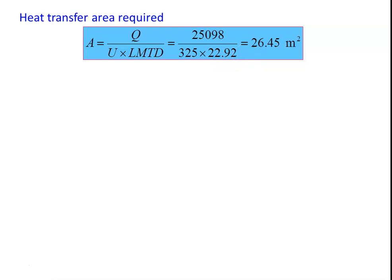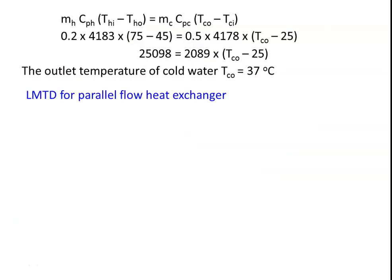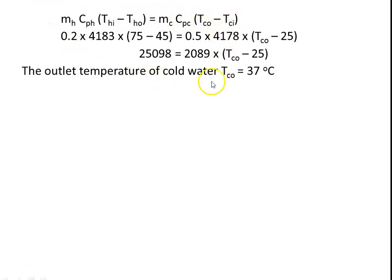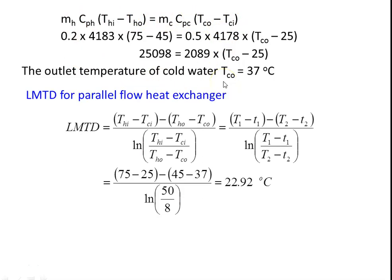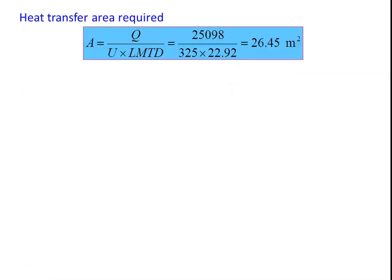So that is what you have to calculate — the area of the heat exchanger. The procedure is: use the heat balance to find outlet temperature, calculate the LMTD, calculate U, then substitute into A = Q/(U × LMTD) to find the area required for heat transfer.